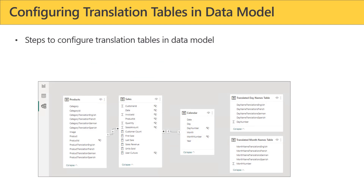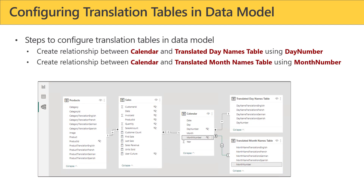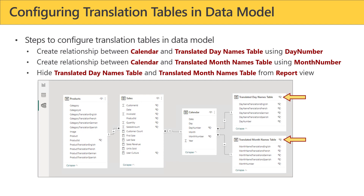At this point, we've created two queries, and when we run them we get two new tables in our data model. First thing we're going to need to do is create some relationships. The calendar table has day number and the translated day names table has day number — we'll create a relationship based on that. Then we'll create a relationship between calendar and the translated month names table on month number. Finally, we're going to hide both of these tables from report view, since we'll provide an easier mechanism for users.